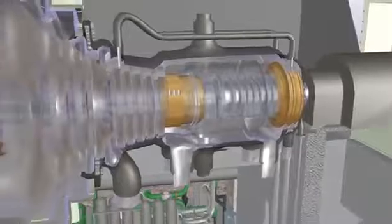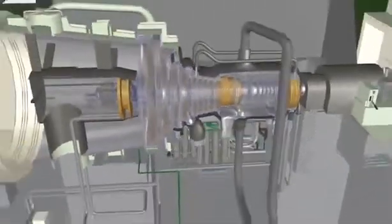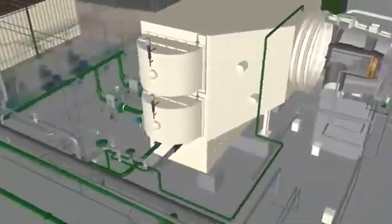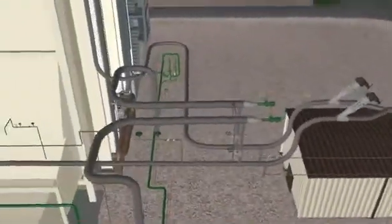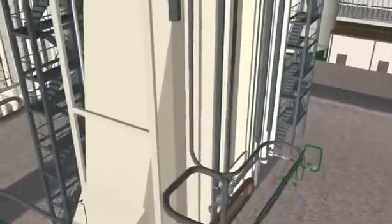Before steam is admitted to the steam turbine for rolling, there is no leak off steam available to seal the shaft glands. A source of steam is needed to seal turbine shaft penetrations to prevent air in leakage.